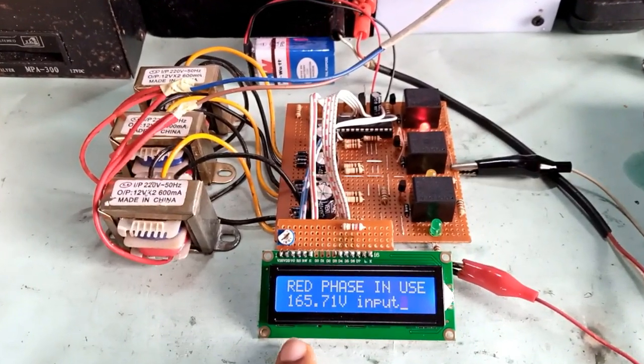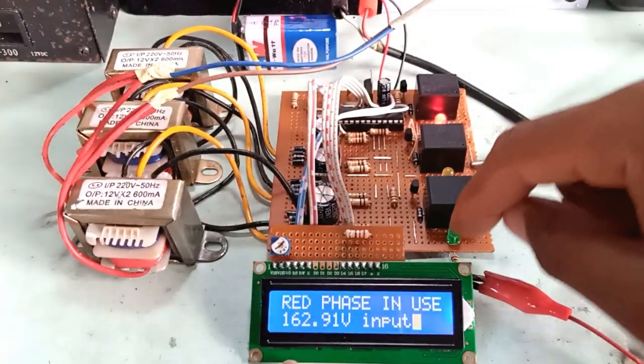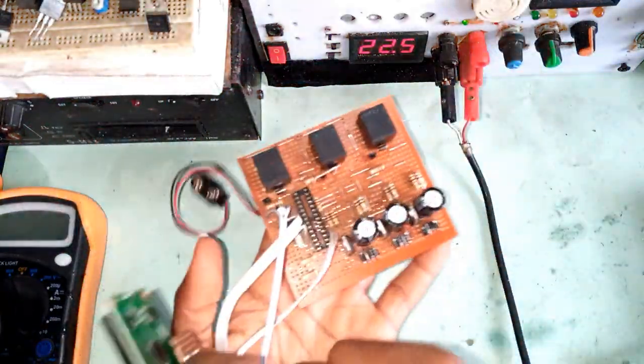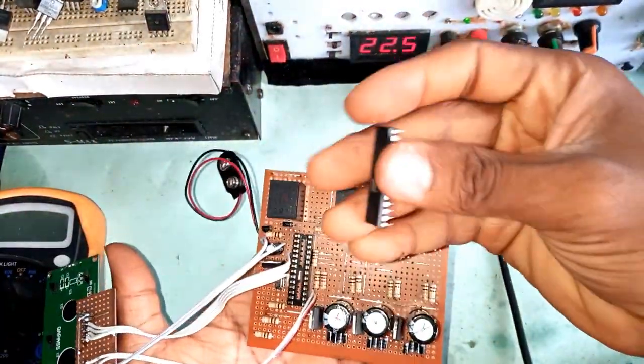A 3-phase automatic changeover system can be developed using different components. Here, we are using the Atmega 328 microcontroller which is commonly found in the Arduino UNO board.